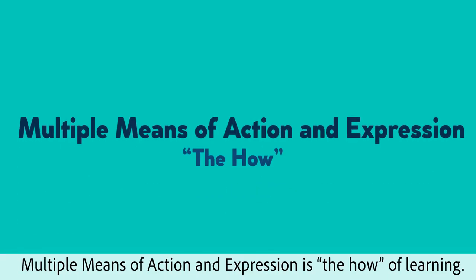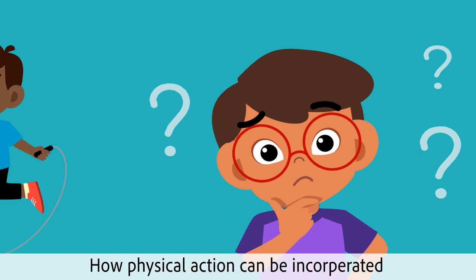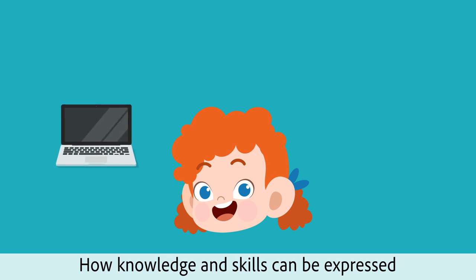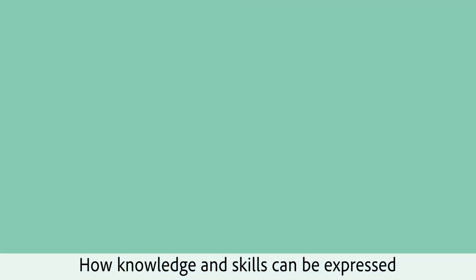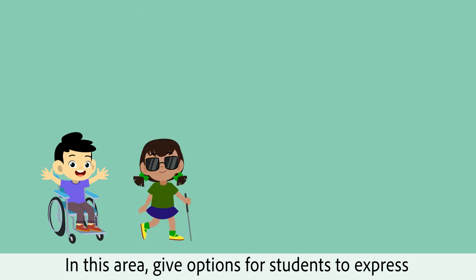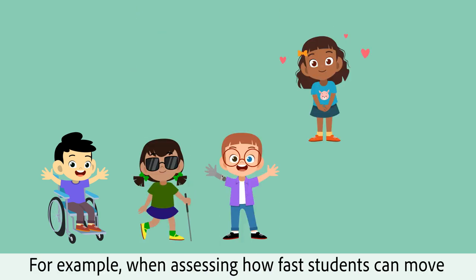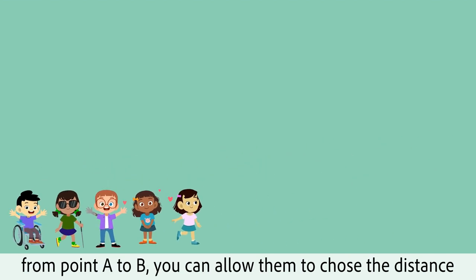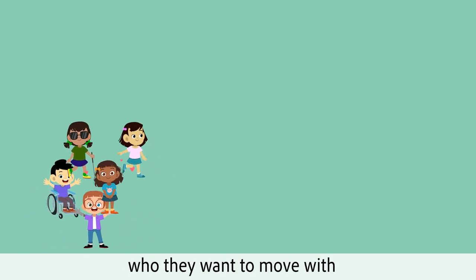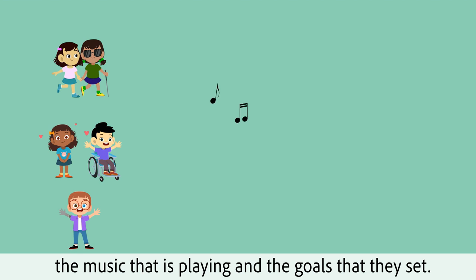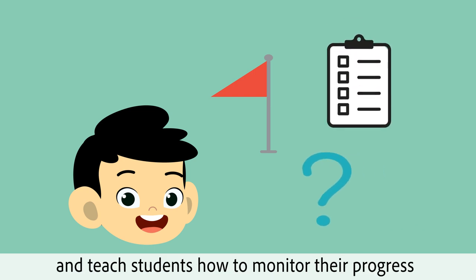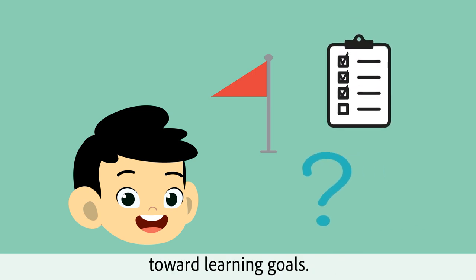Multiple means of action and expression is the how of learning. How can you assess what the students know? How physical action can be incorporated? How levels of support can be added? How knowledge and skills can be expressed? Give options for students to express what they know and can do. For example, when assessing how fast students can move from point A to B, you can allow them to choose the distance and the way they want to move, who they want to move with, the music that is playing, and the goals that they set. Help students set goals, manage information, and teach students how to monitor their progress toward learning goals.